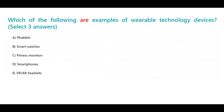Which of the following are examples of wearable technology devices? Select three answers. A. Fitbolt. B. Smartwatches. C. Fitness monitors. D. Smartphones. E. VR/AR headsets.